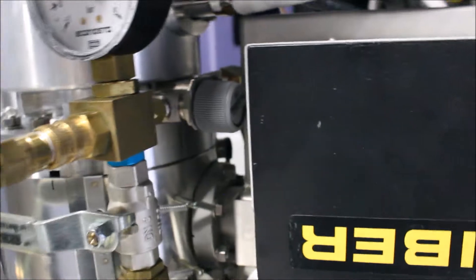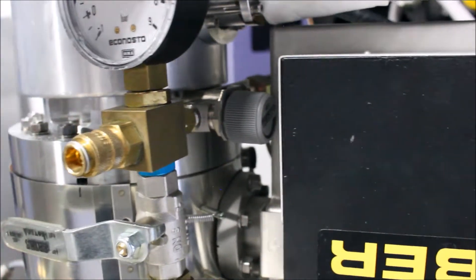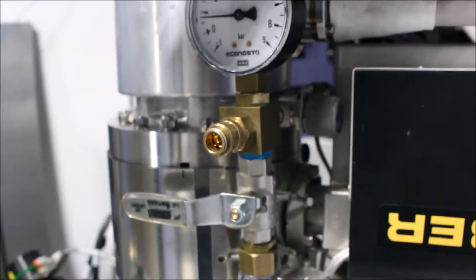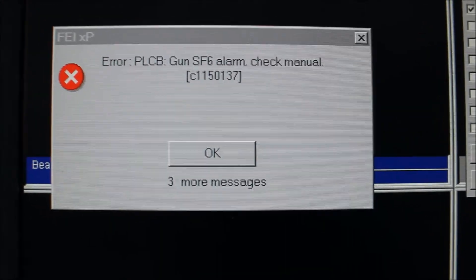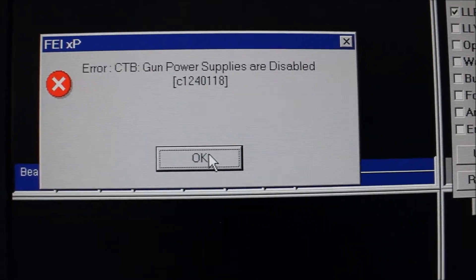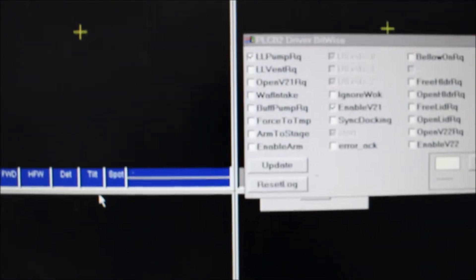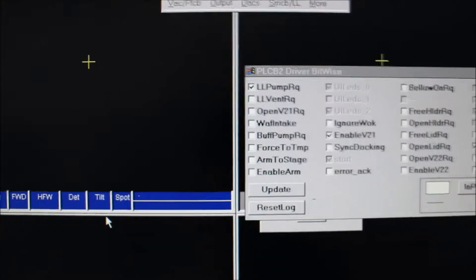Now we can disconnect our SF6 and we can remove the assembly and clear this annoying SF6 alarm, and we can begin our column conditioning procedure.